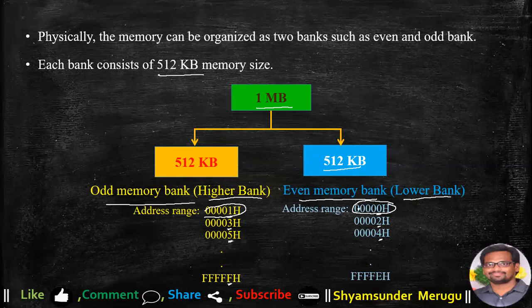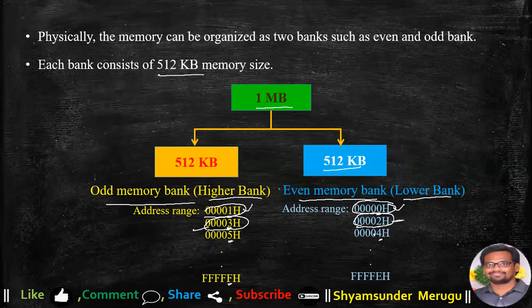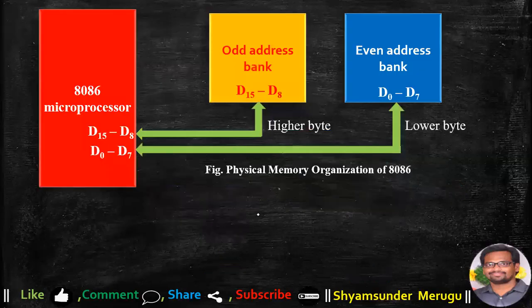When we look at the even and odd addresses — 0 comes first, then 1 — 0 is the lower number and 1 is the higher number. Comparing any two locations, we can observe that the even memory bank contains the lower numbers and the odd-numbered memory bank contains the higher numbers. So the even memory bank is called the lower bank, and the odd memory bank is also called the higher memory bank.